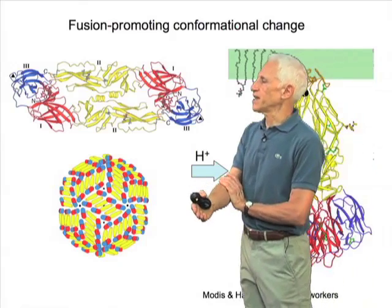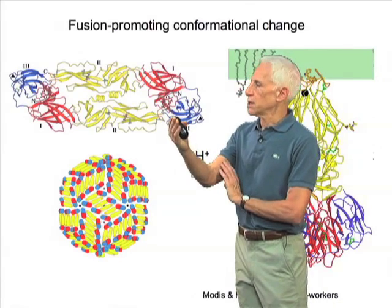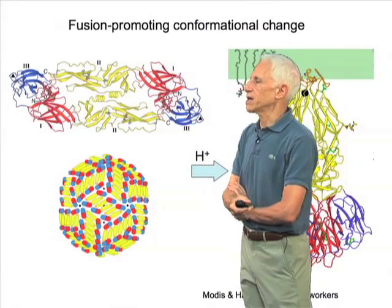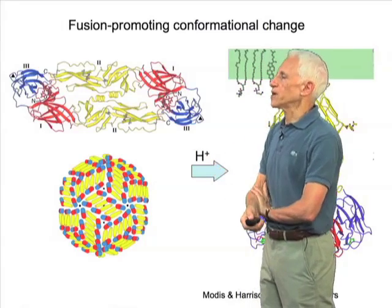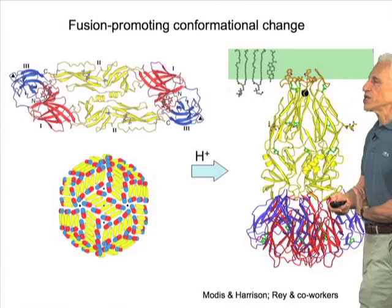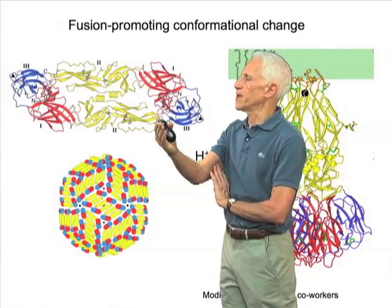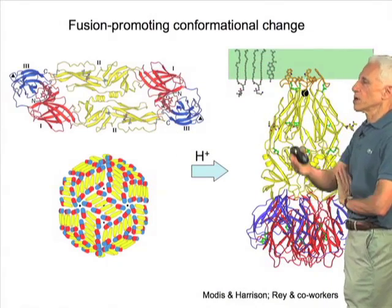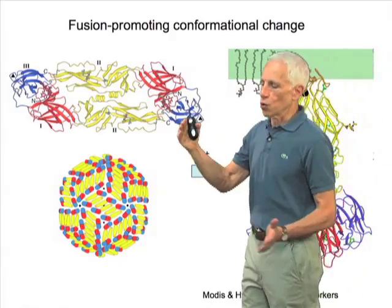In the case of the dengue virus particle, there is a rearrangement from the dimeric structure shown here — a rather plate-like organization of two somewhat elongated protein subunits — into a trimer, in which hydrophobic residues at the tip of one of the domains, this yellow domain, so-called domain 2,